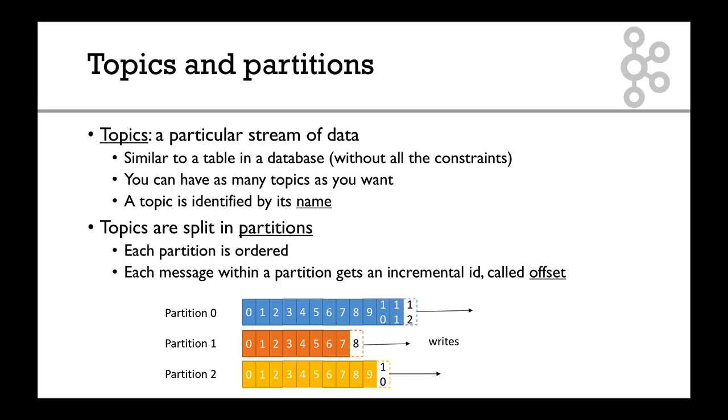As I said, the topic has multiple partitions. We'll have partition 0, partition 1, partition 2, and each partition has their own offsets. For partition 1, the orange one, the offsets go from 0 to 8, and for partition 2, the offsets go from 0 to 9, and the next offset will be 10.